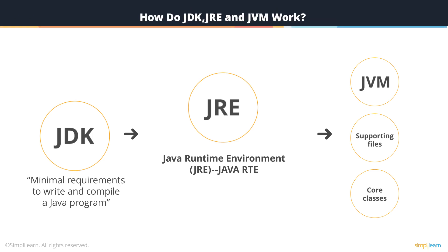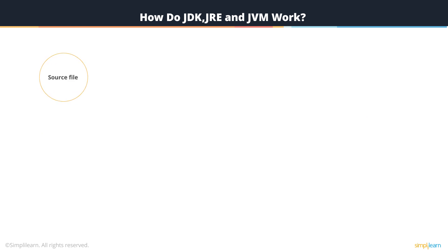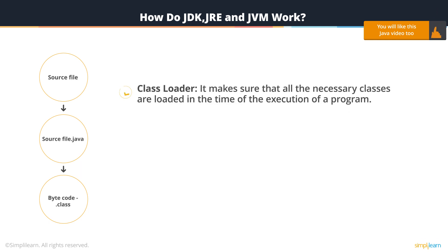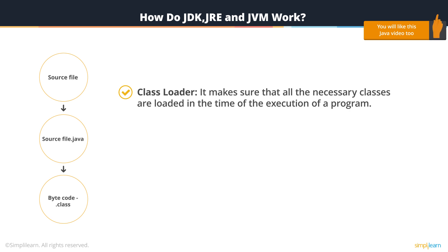We are now in a position to deep dive into the process with which JDK, JRE, and JVM work. Let's take a source file and save it with the extension .java. This file is compiled and converted into a set of bytecode, which changes the file extension to .class. This is done specifically by the JDK. Here are the steps that follow: ClassLoader — it makes sure that all the necessary classes are loaded at the time of execution of a program.